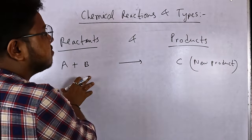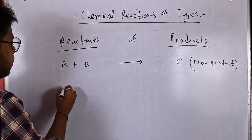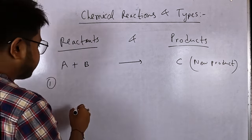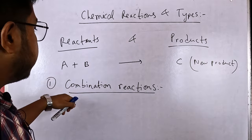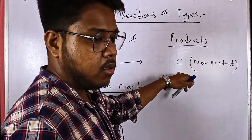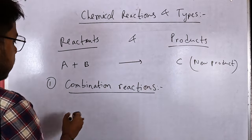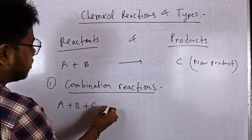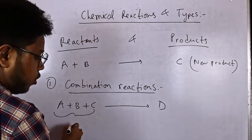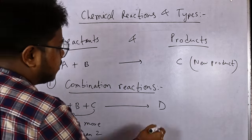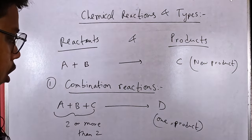Depending on the number of reactants and number of products, we can divide chemical reactions into several different types. First, there is what we call a combination reaction. Combination means we are combining two or three reactants to get a new product — that is, only one product is formed using two or three different types of reactants. Like, we use A plus B plus C to get a new product D. The number of reactants should always be two or more, and the product will always be only one. This is called a combination reaction.